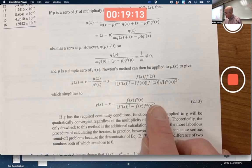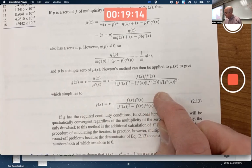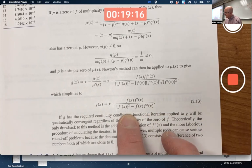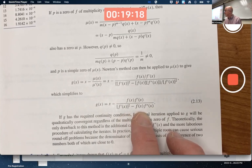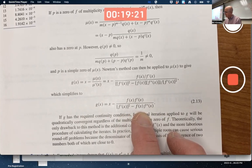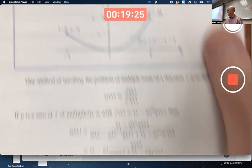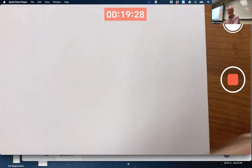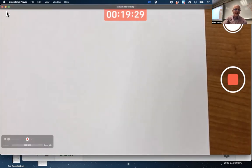x minus this fraction where the new numerator is f times f prime, and the new denominator is f prime squared minus f times f double prime. Okay, so you already implemented this once on your homework. Let's implement it, just a little bit more practice.